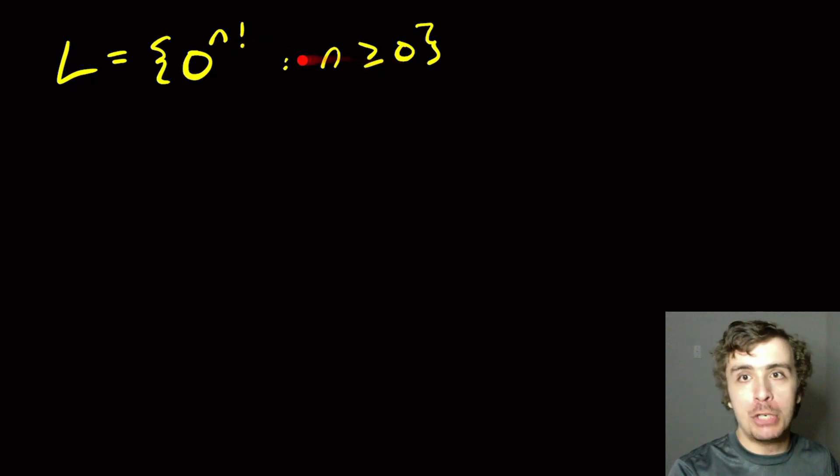So zero factorial is one, well it's defined to be one, so we would have exactly one zero in here. If n is one, we would have one zero again. If n is two, then this would be two zeros. If n is three, this would be six zeros. If n is four, that'd be 24 zeros, etc.